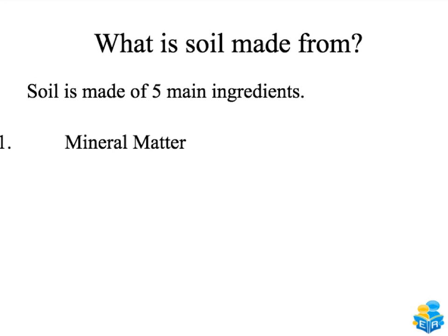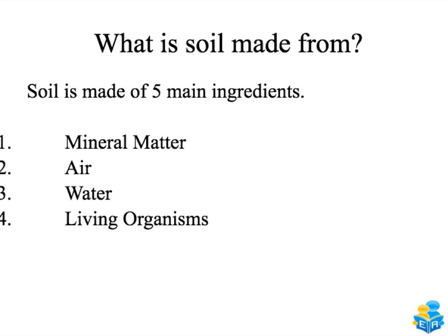So what is soil made up of? Soil is made up of five main ingredients: mineral matter, air, water, living organisms, and humus.